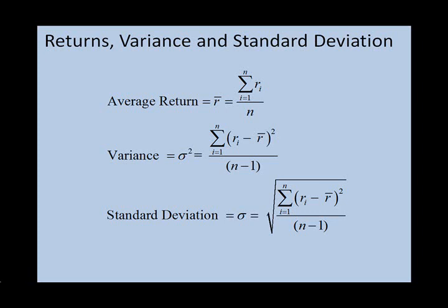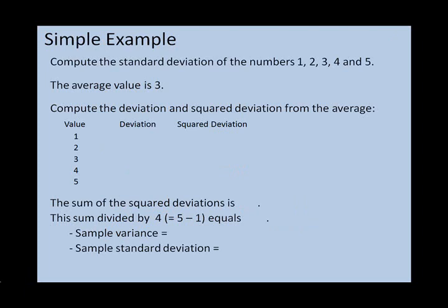But let's work through a simple example, just to make sure we're all on the same page. Compute the standard deviation of the numbers 1, 2, 3, 4, and 5. The average value is 3. And we've got to compute, first of all, the deviation from the average. In this case, 1 minus 3. In this case, it's 2 minus 3. 3 minus 3. 4 minus 3. And 5 minus 3.